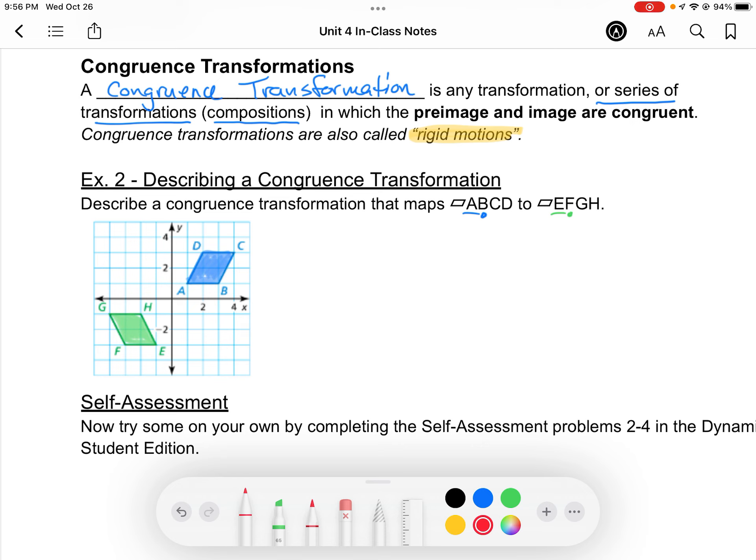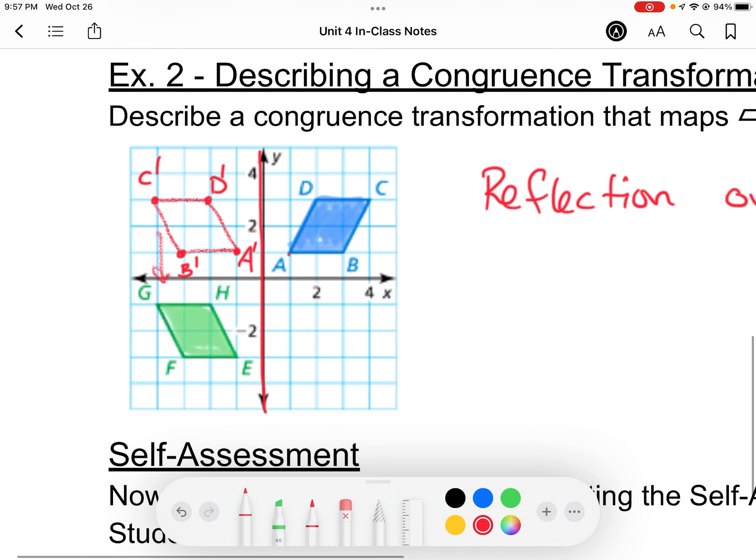So if I reflected over the Y-axis, A goes to A-prime, D is two away on the left now to D-prime, C is four away on the left to make C-prime, and B is three away to be B-prime. So this reflection then can be moved to that one by a translation. So the first thing we did was a reflection over the Y-axis.